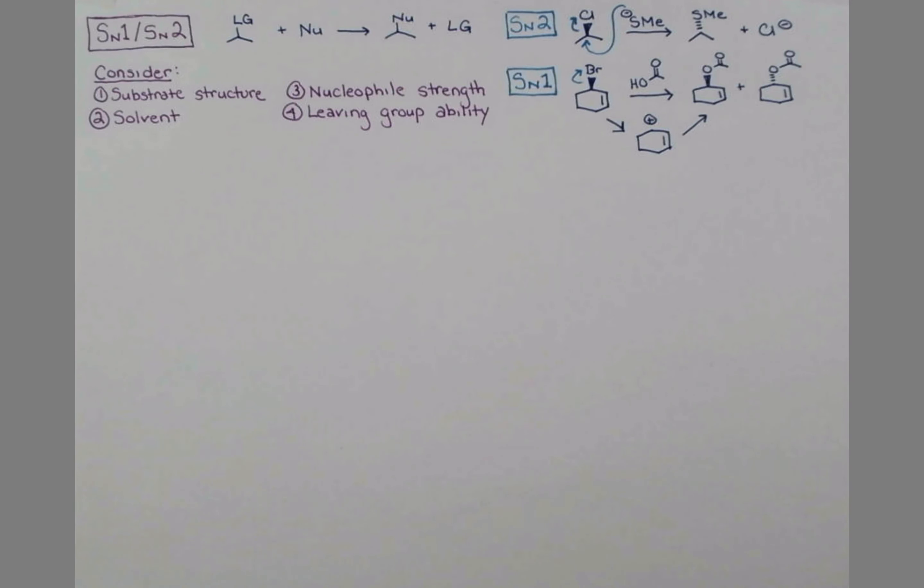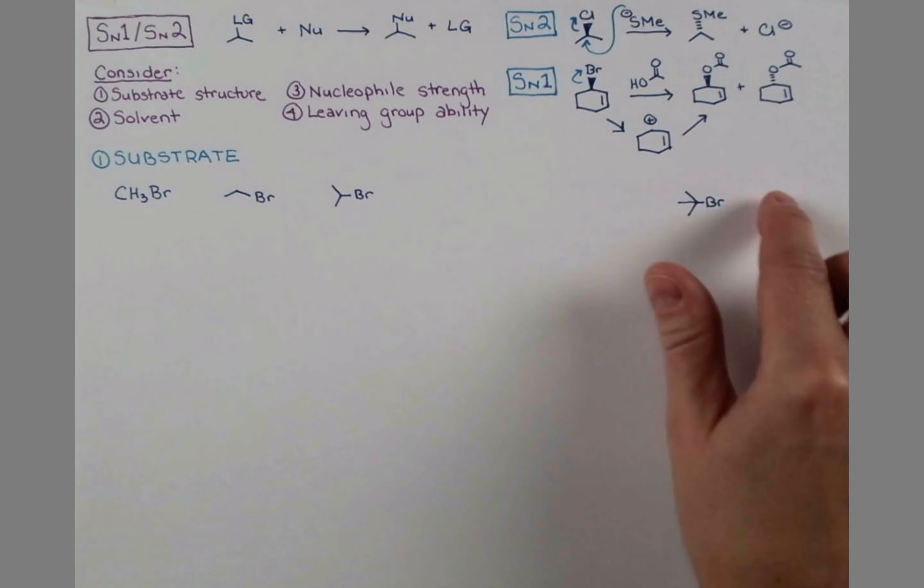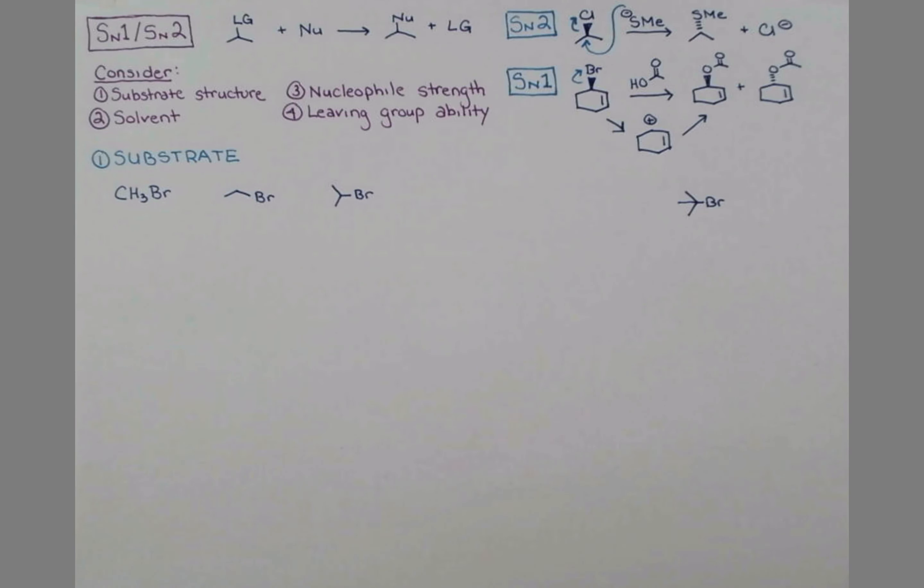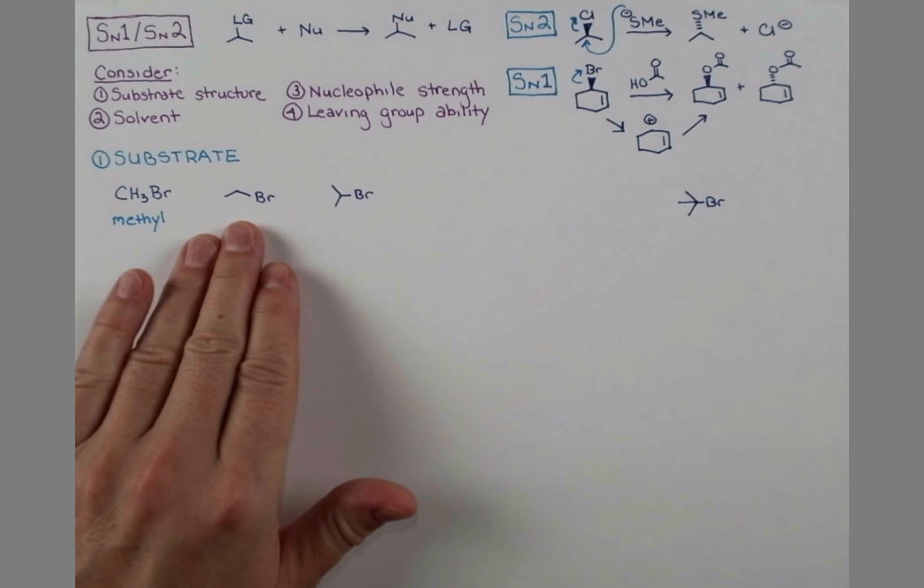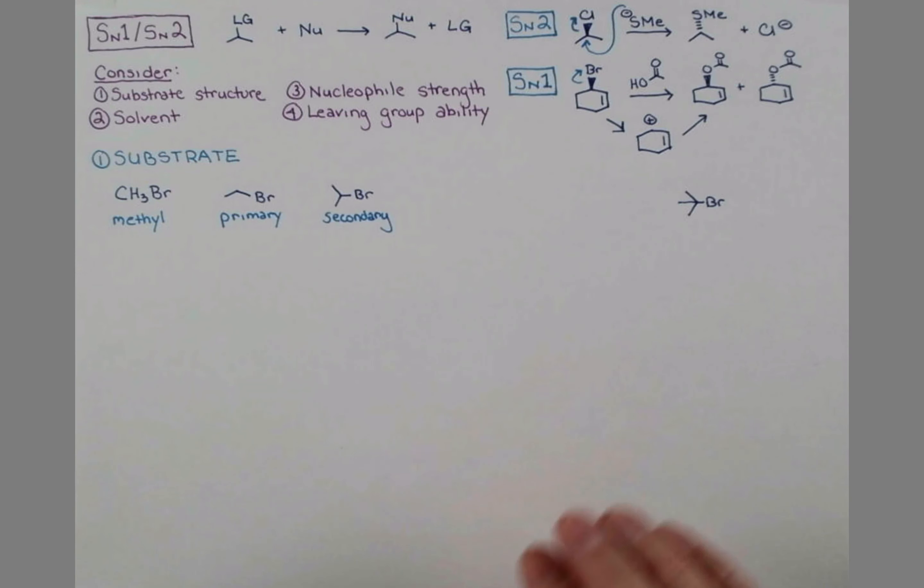Let's begin with our examination of substrate structure. To be consistent, we're going to look at a bunch of bromides here. We'll begin by examining these four bromides. Methyl bromide contains only a methyl group and our leaving group. Our next halide is primary. This halide here is secondary. And our guy way over here is tertiary.